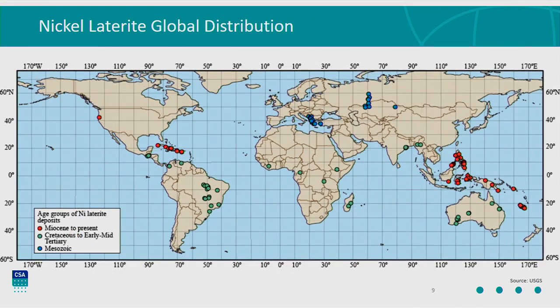The global distribution of these deposits is very much concentrated into tropical weathering environments, or palaeotropical weathering environments — preserved deposits where at the time of formation it was in tropical conditions. The distribution is relatively well understood. Maybe some places in South America and Africa where there is some residual discovery potential, but then you have other issues around ESG and various other things as to whether you can actually do anything with them. They are fairly well understood, and there isn't a lot of exploration upside.